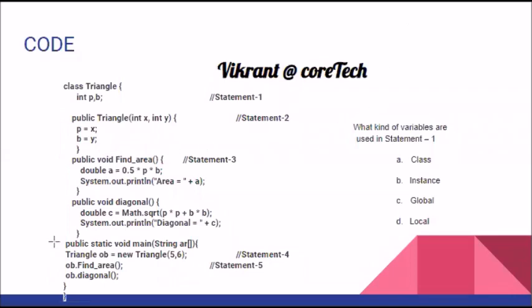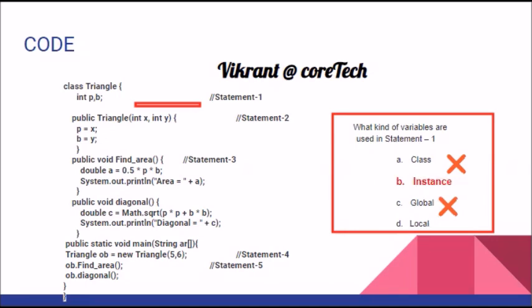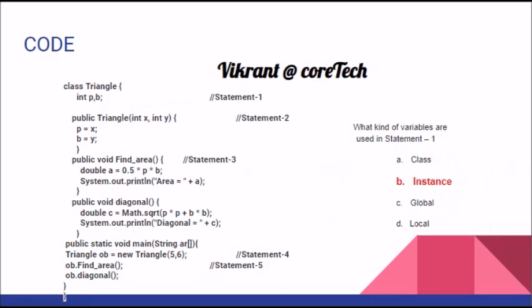The first question asks: what kind of variables are used in statement one? The variables used here do not have the keyword static, so there is no possibility that they are class variables. They are also not global variables. Local variables are something written inside a function — these are not inside a function. The correct answer is instance variables.